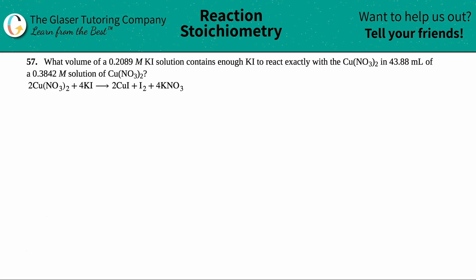Number 57: What volume of a 0.2089 molarity potassium iodide KI solution contains enough KI to react exactly with copper 2 nitrate, which is Cu(NO3)2, in 43.88 milliliters of a 0.3842 molarity solution of the copper 2 nitrate?